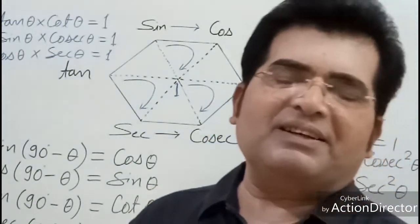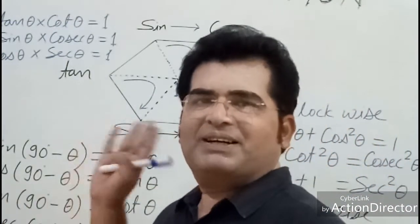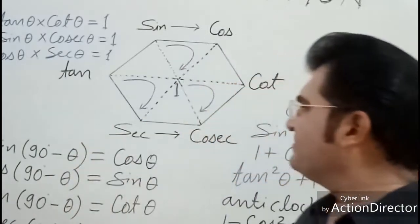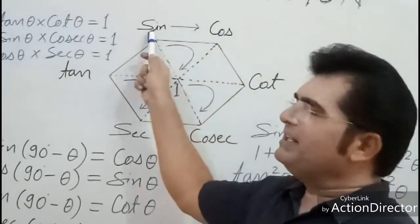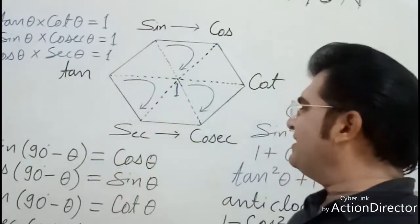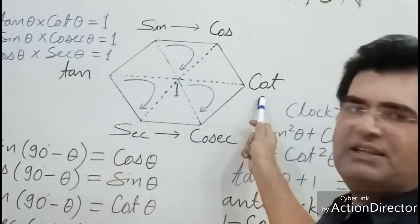Now you can get other trigonometric identities also with the help of this hexagon, like complementary angle identities: sin 90 minus theta equals cos theta, cos 90 minus theta equals sin theta, tan 90 minus theta equals cot theta.